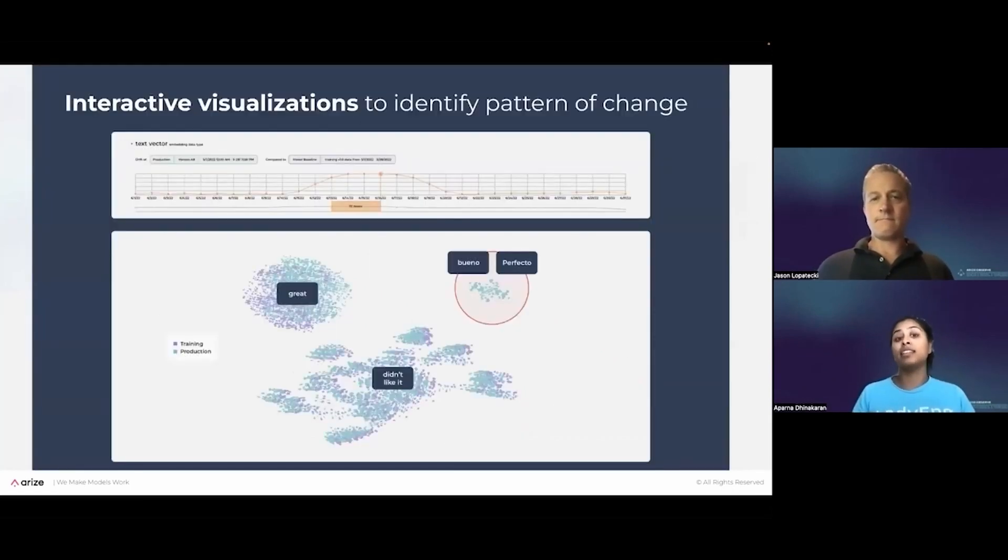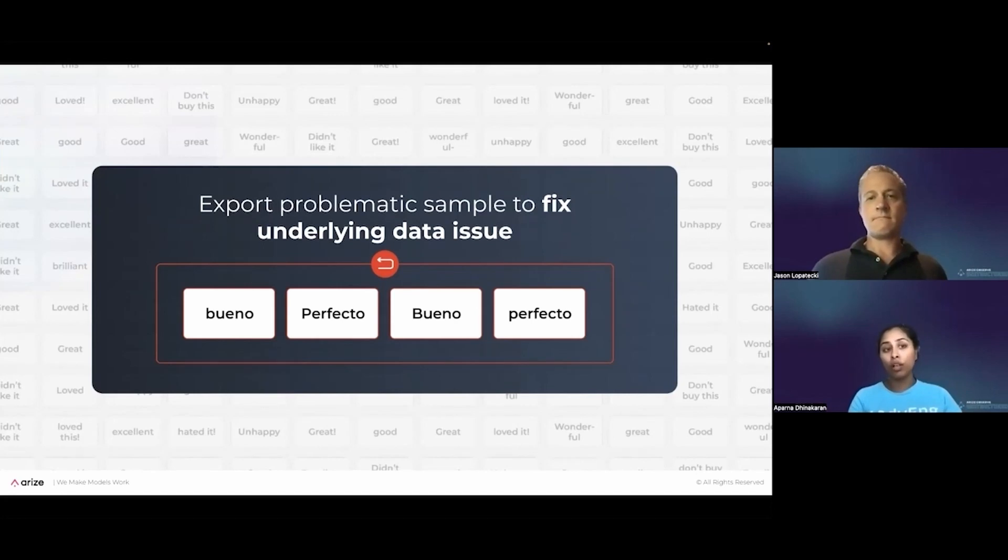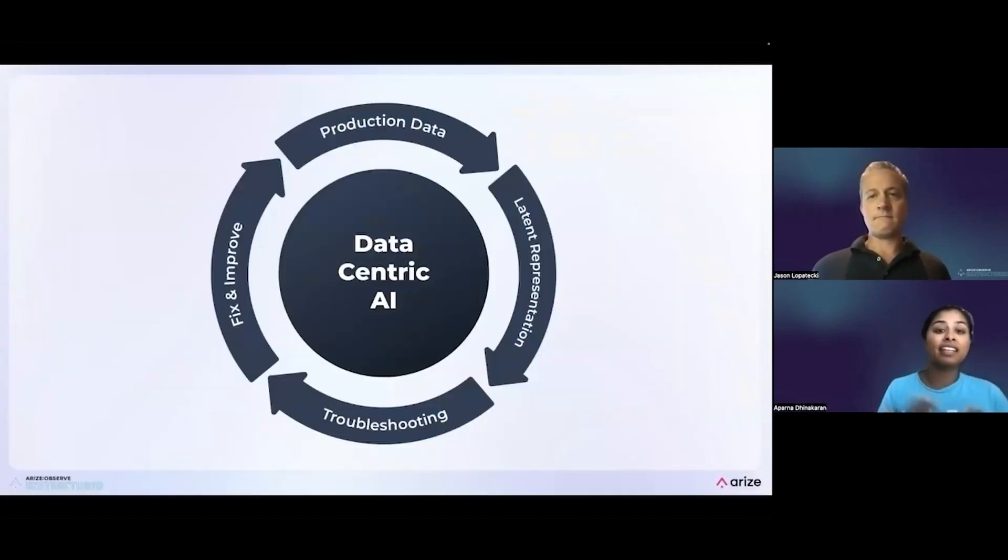And then there's workflows when drift has been detected to actually drill down into interactive visualizations to identify what are those problematic segments or groups that are causing that drift. And so in this example here, you might see a pocket of data here, which is kind of the Spanish data, the Spanish data points. And you can actually see that there's an outlier group that's showing up just in production, wasn't there in training really quickly. ML engineer, data scientist can grab this and say, looks like we need to label more data from a different language that the model is now seeing in production. And what this is really creating is a workflow to be able to export problematic samples to fix underlying data quality or data issues.